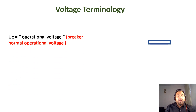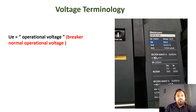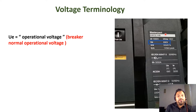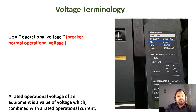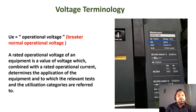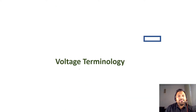Ue is the operational voltage. Every piece of equipment can be operated within certain voltage limits, and circuit breakers are no different. Looking at this circuit breaker, the Ue value is indicated as 690 volts, meaning this circuit breaker can operate up to 690 volts. This is the normal operating voltage — that is the Ue value.